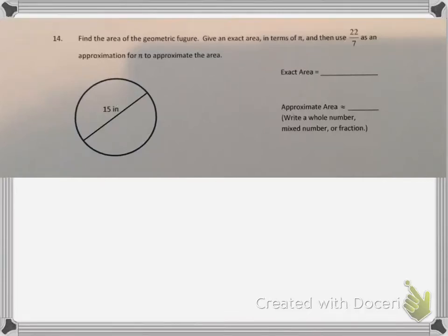Find the area of the geometric figure, give an exact area in terms of pi, and then use 22 sevenths as an approximation for pi to approximate the area.